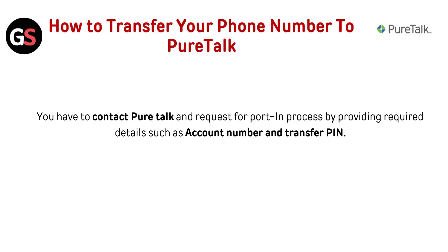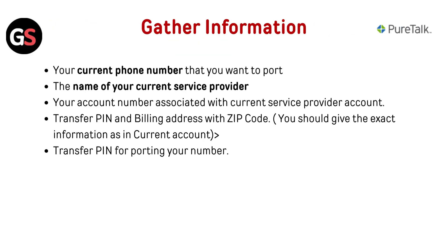You have to contact PureTalk and request the port-in process by providing required details such as your account number and transfer PIN. Gather the following information: your current phone number that you want to port, the name of your current service provider, your account number associated with your current service provider account, transfer PIN, and billing address with zip code. You should provide the exact information as it appears in your current account.